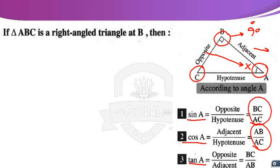Sine A equals BC over AC. Tan A: tan A equals the ratio between the opposite side length over the adjacent side length — opposite side over adjacent side. For angle A, the opposite is BC and the adjacent is AB. Therefore, tan A equals BC over AB.